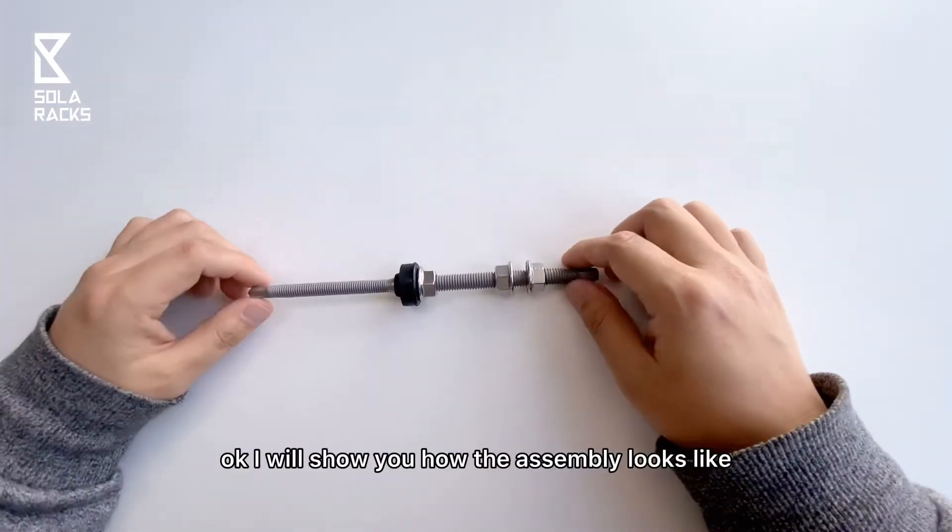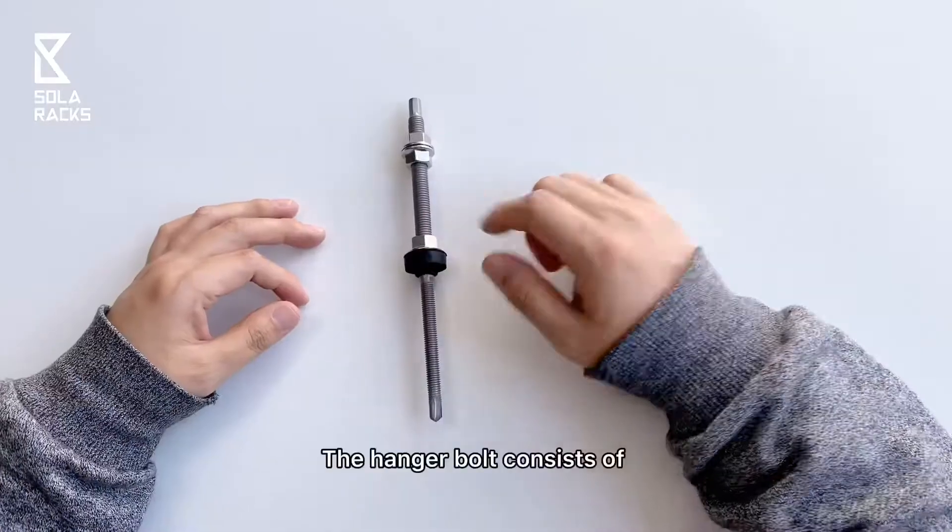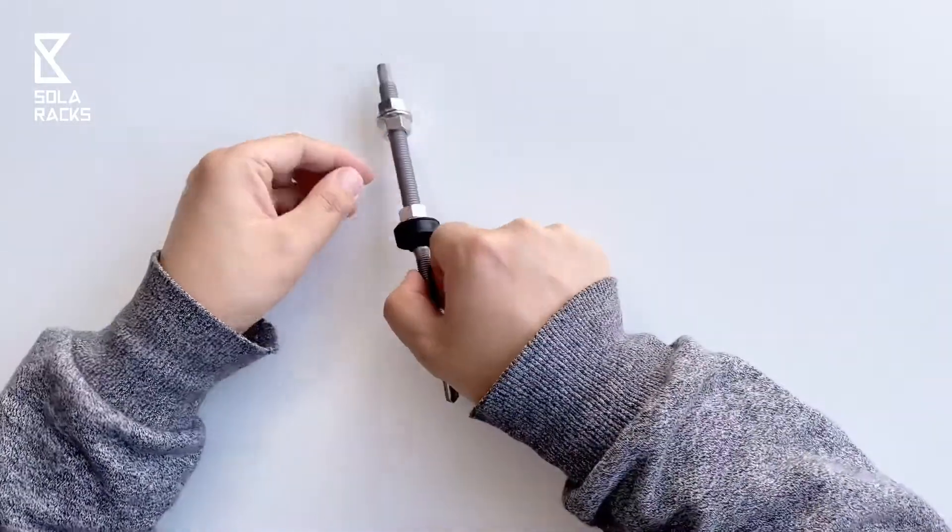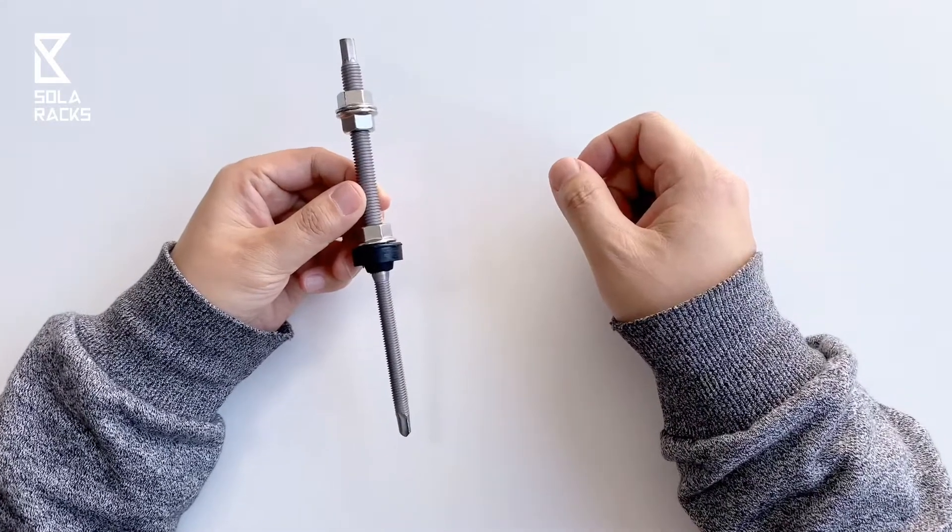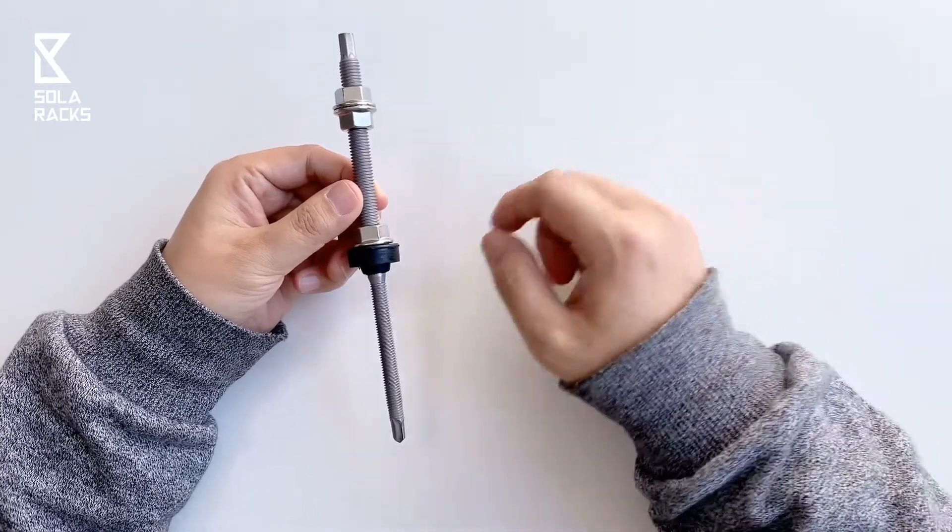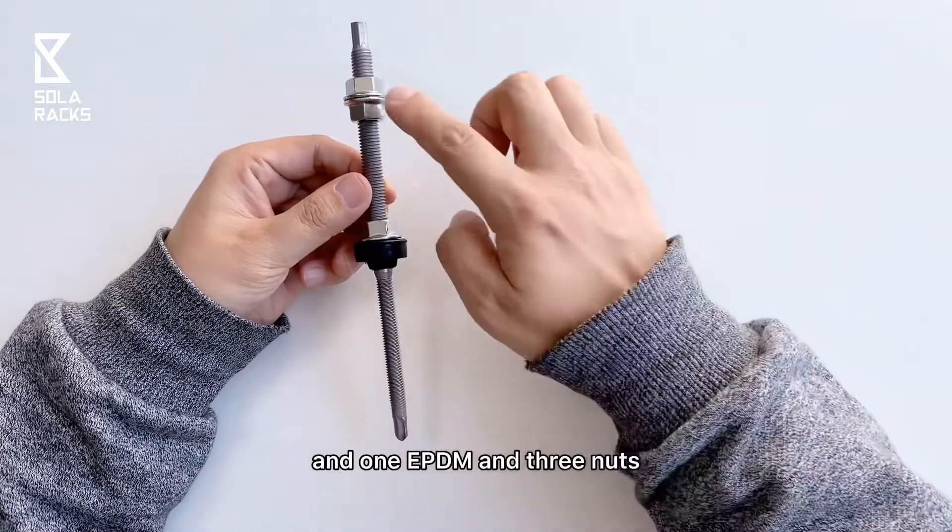Ok, I will show you how the assembly looks like. The hanger bolt consists of a threaded bar, normally 200mm and 250mm, and 1 EPDM and 3 nuts.